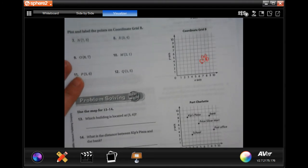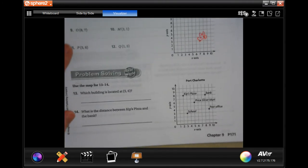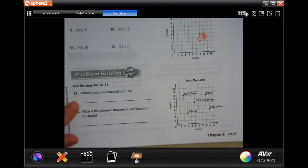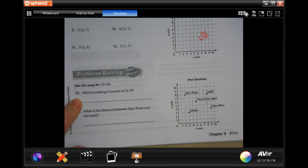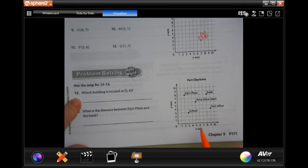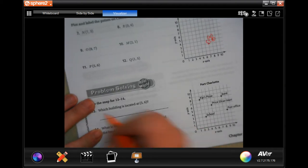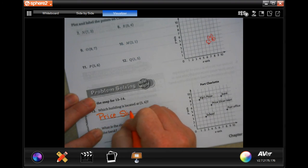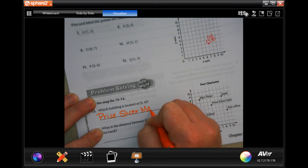Now we're going to go down and do number thirteen. And it says, which building is located at five, six? So we're going to go over five and up six. And it says Price Slicer Market.